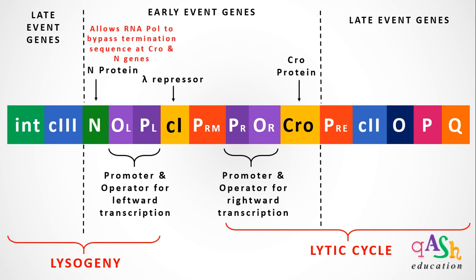Among the early event genes, the N gene codes for the N protein. The N protein allows RNA polymerase to bypass the termination sequences present at the Cro gene and N gene, thereby continuing transcription of the genes.